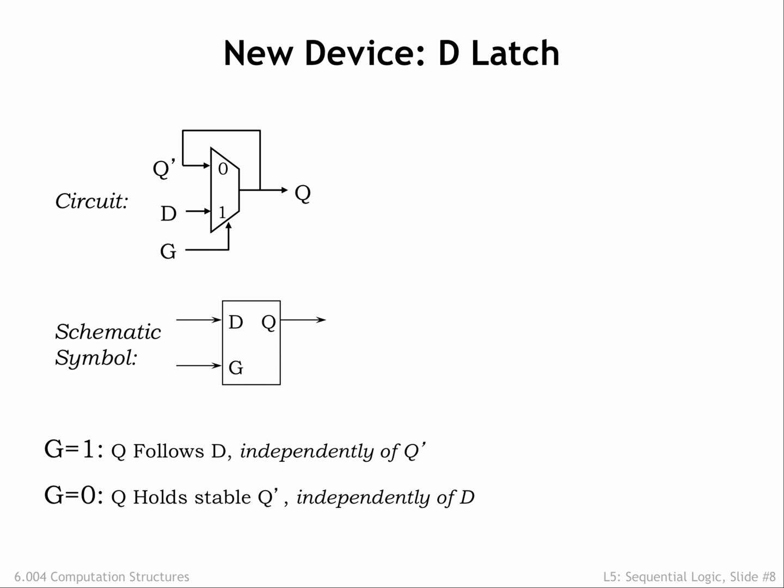When the latch's gate is high, the latch is opened and information flows from the D input to the Q output. When the latch's gate is low, the latch is closed and in memory mode, remembering whatever value was on the D input when the gate transitioned from high to low.